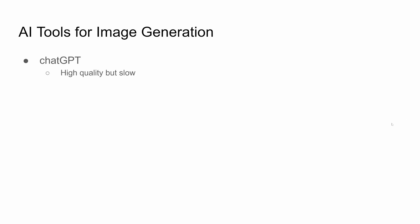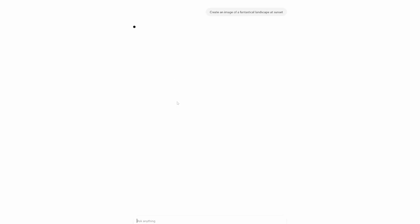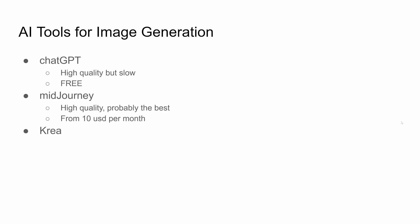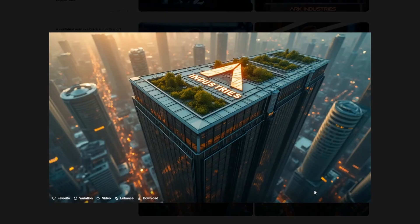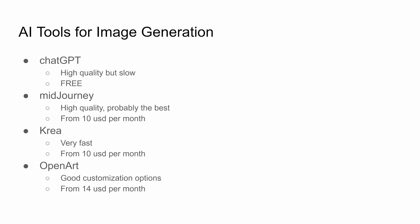Feel free to skip this part if you're here for the conceptual explanation only, as I'll show practical creations later in the video. But right now, let's talk about the different AI tools for image generation. ChatGPT is one of the best because it's completely free and has very good quality. Then there are paid options like Midjourney, which is probably the best one; Crea, which excels because it's really fast; and OpenArt, which has very good customization options from what I've seen.